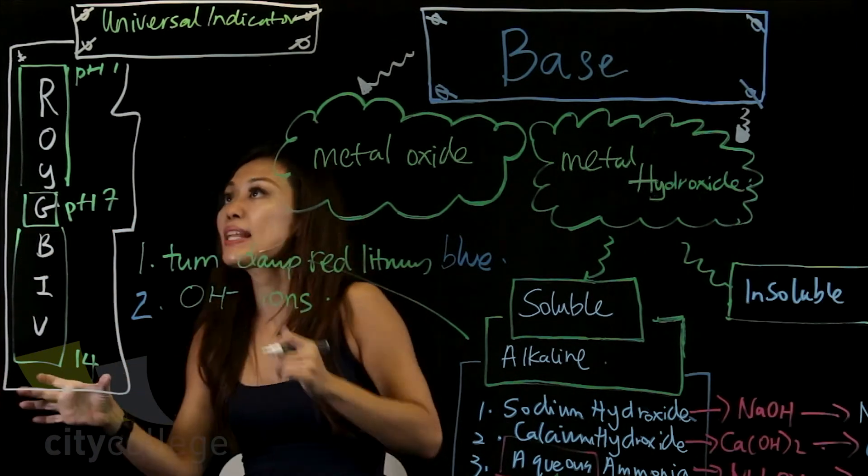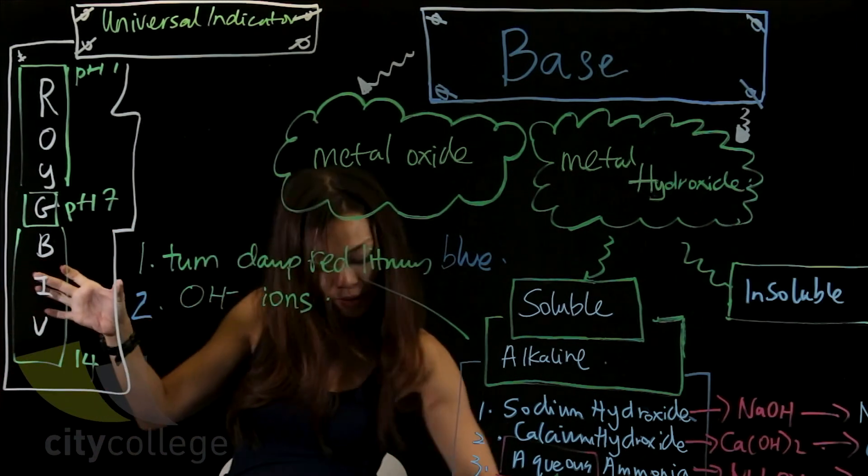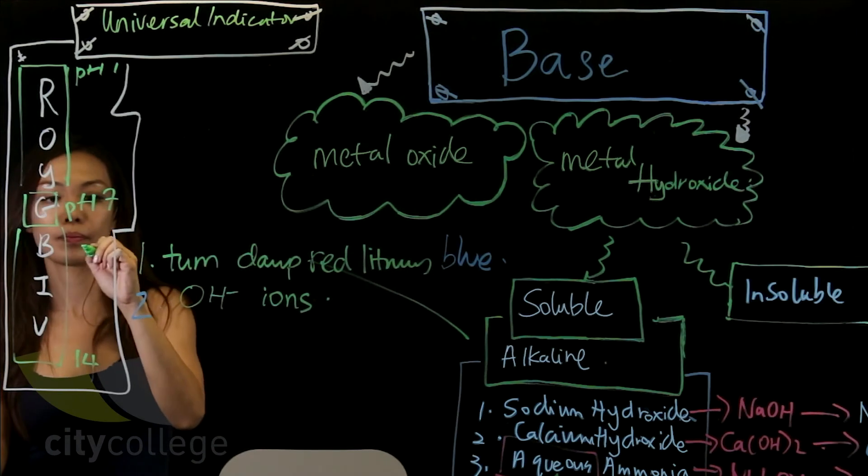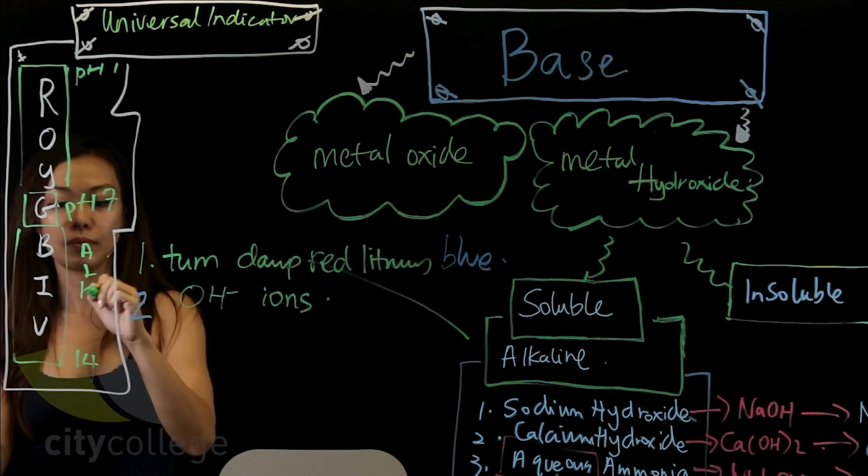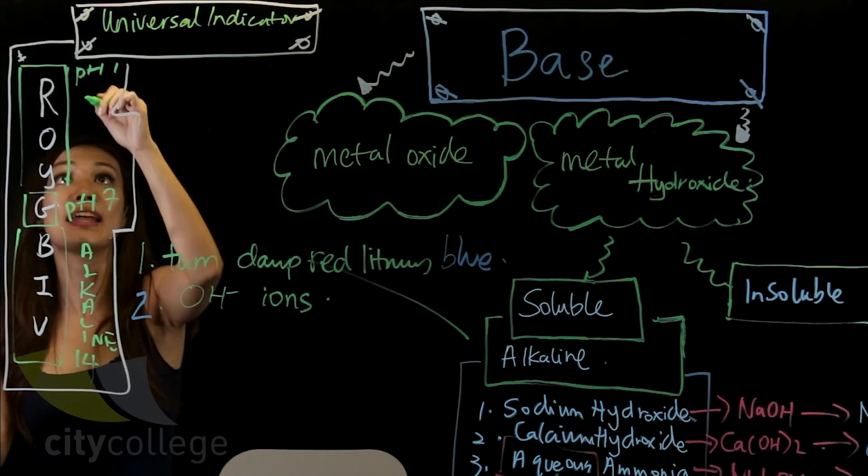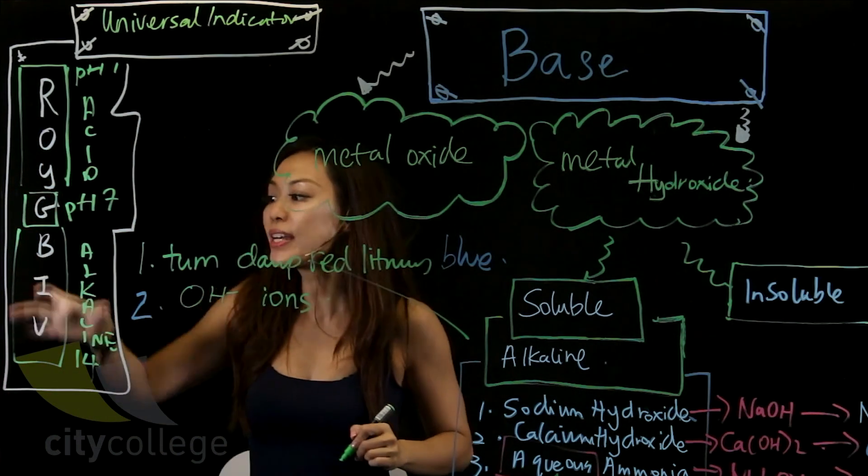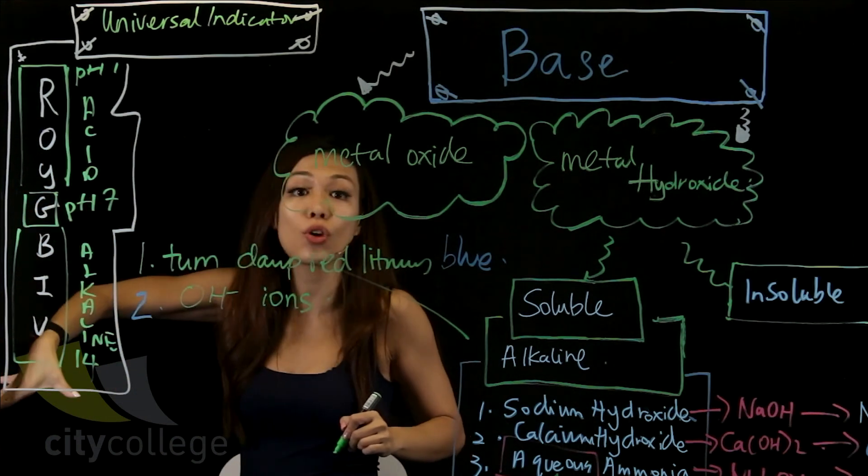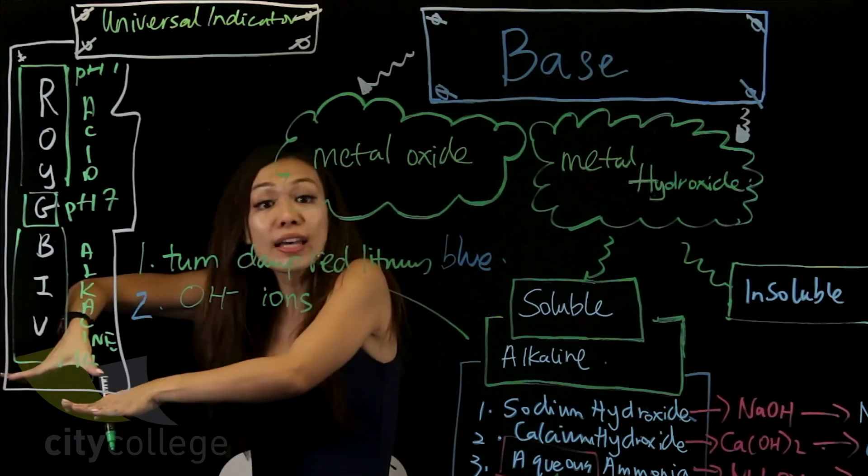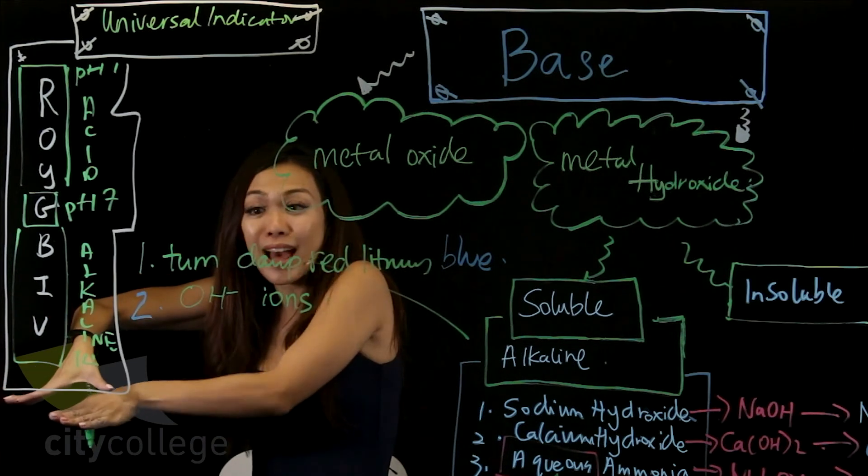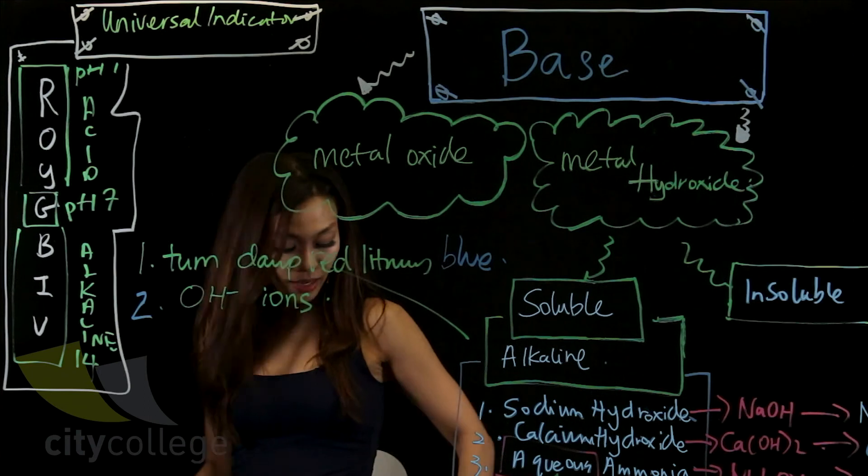Now, over this part here is my alkaline. So I'm going to write down alkaline here. Alkaline, and these are your acid. So alkaline are the blue all the way to your violet. The more alkaline it is, the darker will be the colour, which is all the way to violet colour.